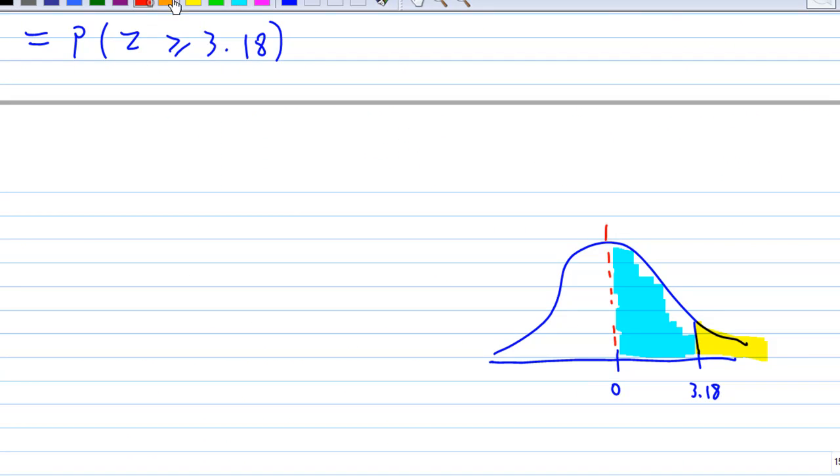That means this area is 0.4993. The area of the yellow tail is 0.5 minus 0.4993, which equals 0.0007. We find that the probability of z greater than or equal to 3.18 is 0.0007, which is very, very small.